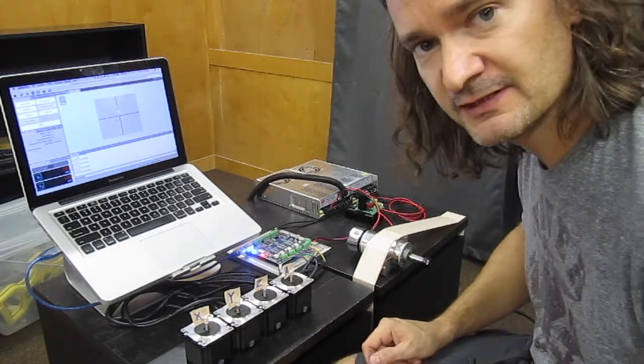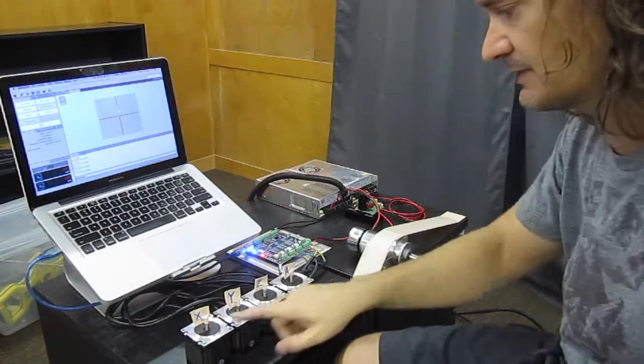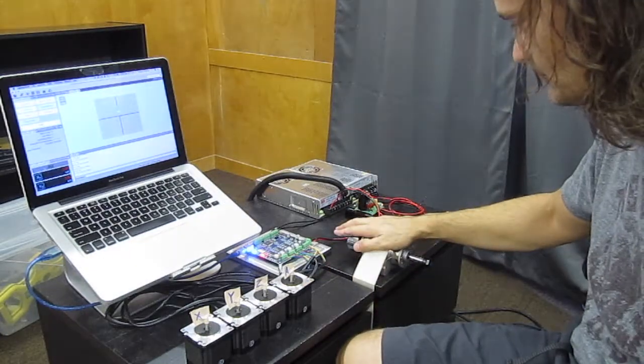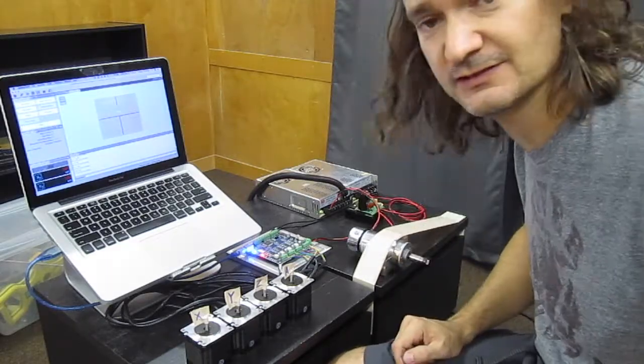So I'm pretty happy, everything moves. Universal G-code sender successfully communicating with the four steppers on a four axis system and the spindle motor, which you can turn on and off using the tiny g board and Universal G-code sender.